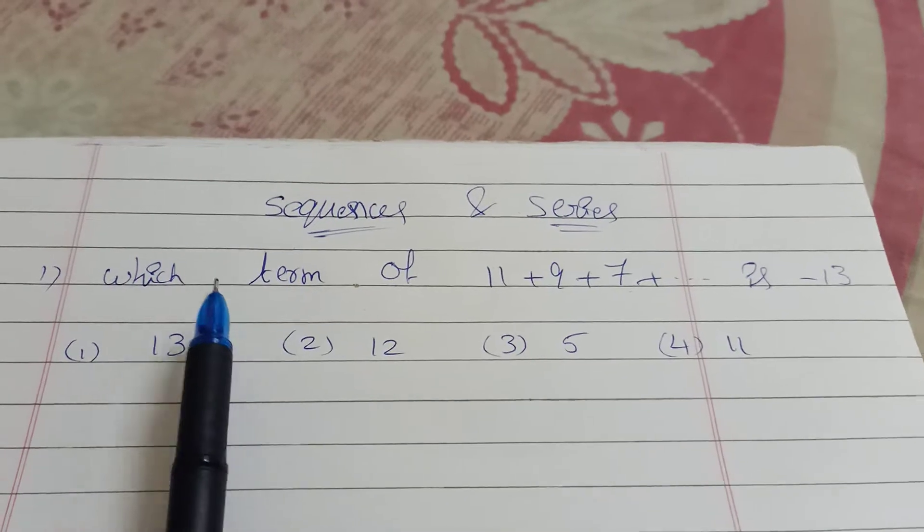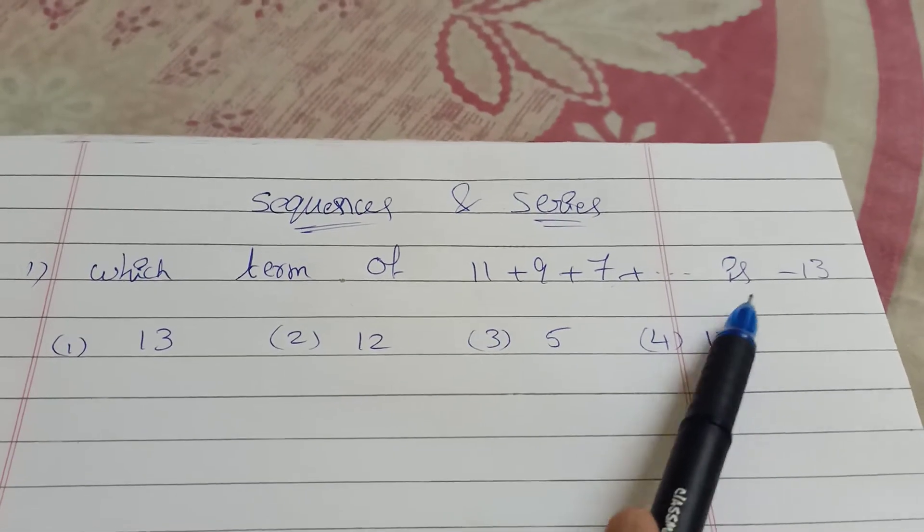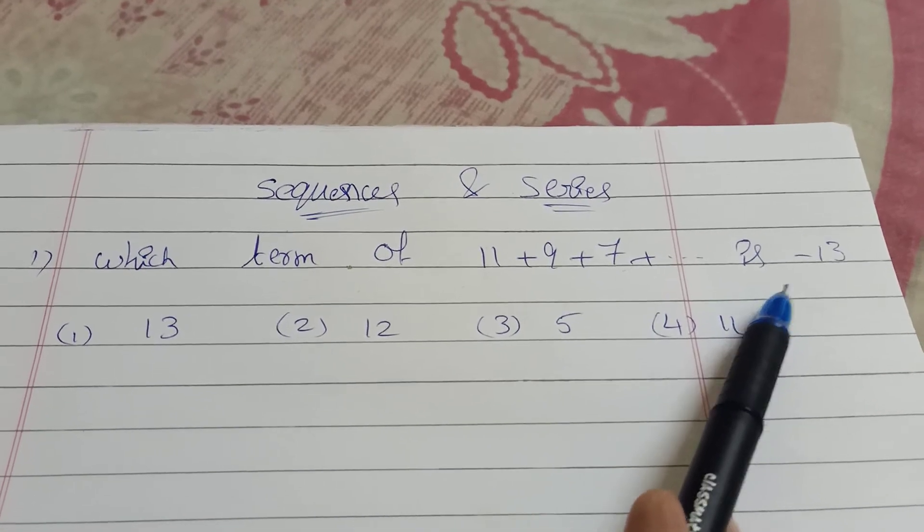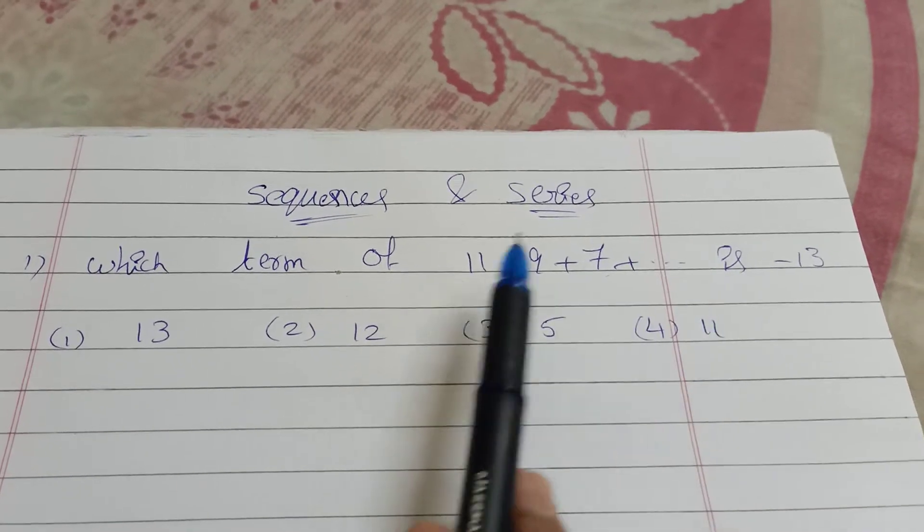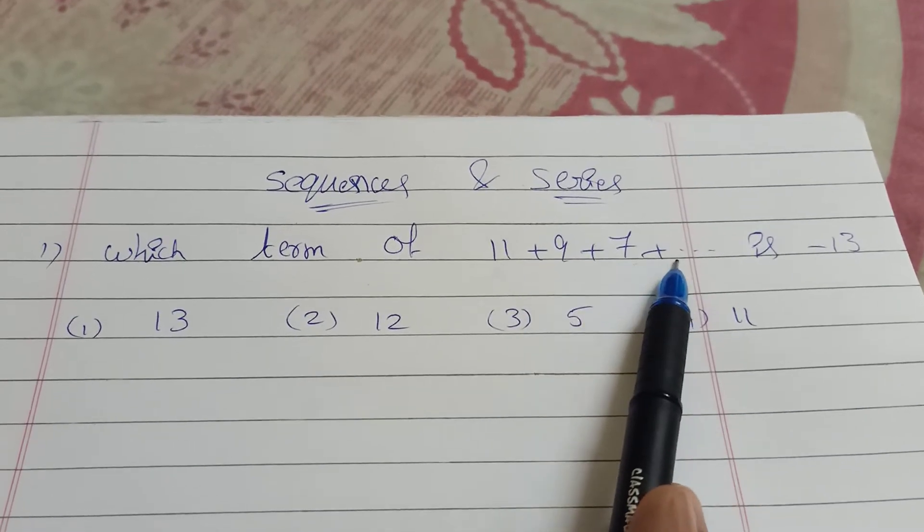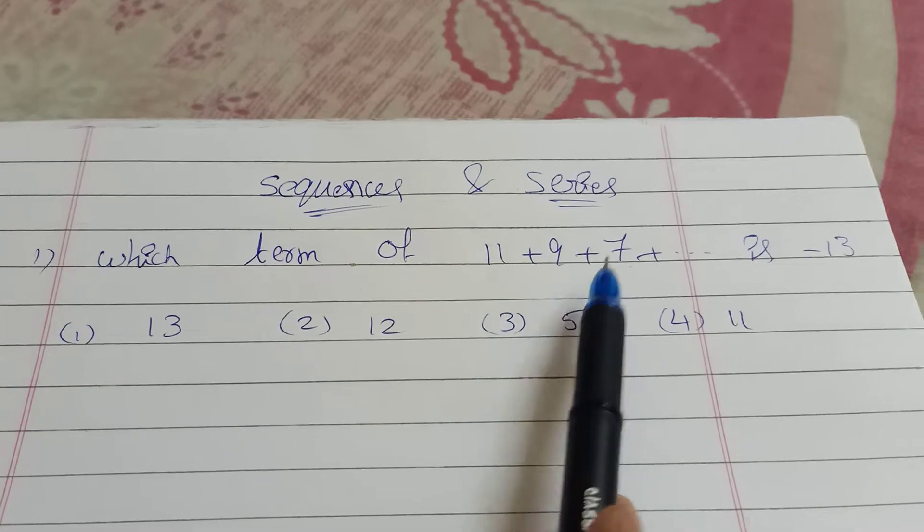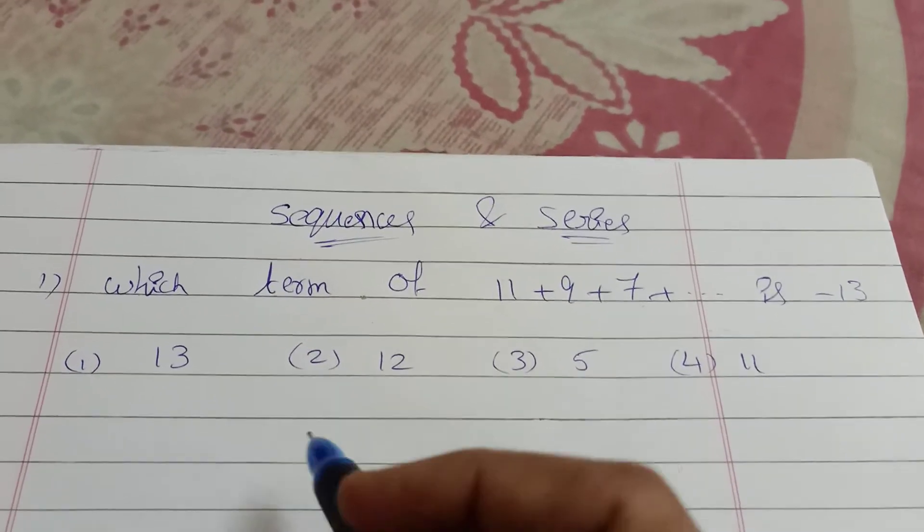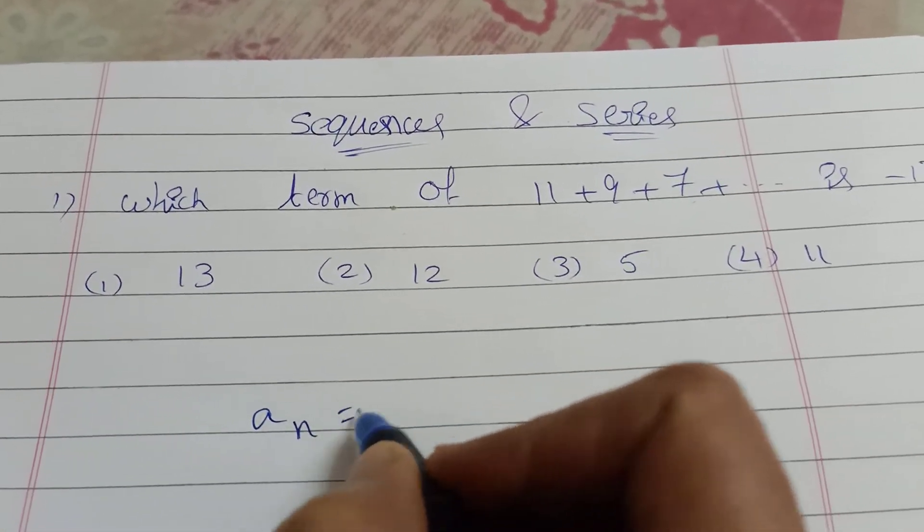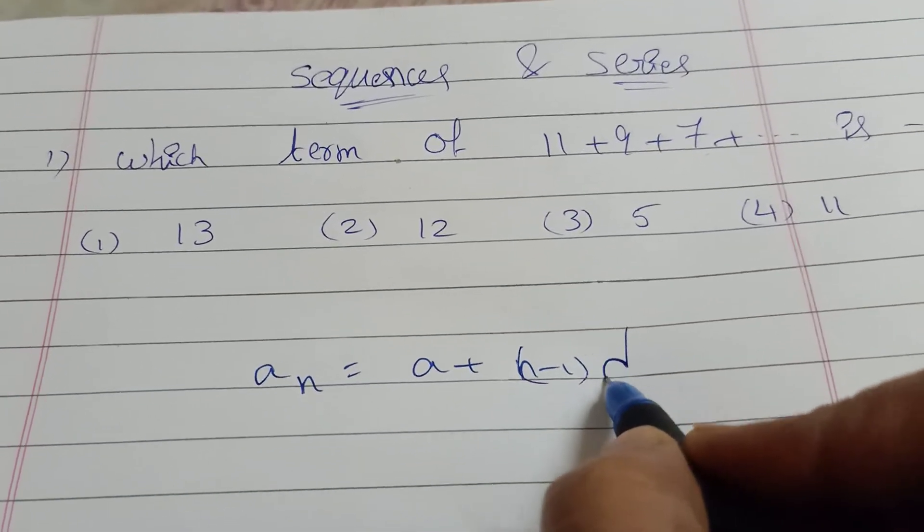We need to find which term equals minus 13. First, we'll check if this is an AP. The common difference is the same, so this is an AP. We will use the nth term formula: a_n equals a plus (n minus 1) times d.